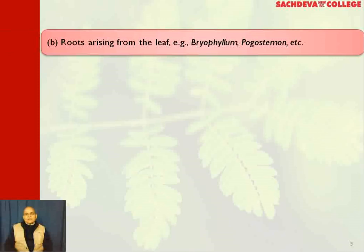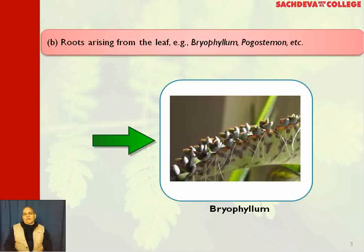The second type is roots arising from the leaf. An example is Bryophyllum. This is the leaf of Bryophyllum, known as 'patrachata.' It is said to help in dissolving kidney or gallbladder stones. In the notches of the leaf, you can see a shoot with stem ultimately developing into plantlets. So the roots are arising from the notches of the leaf. It is considered to be a medicinal plant.